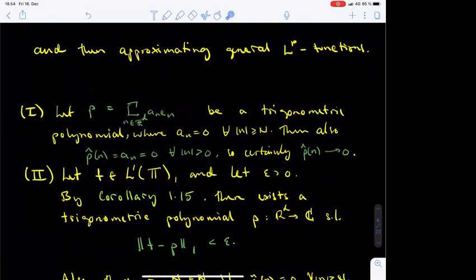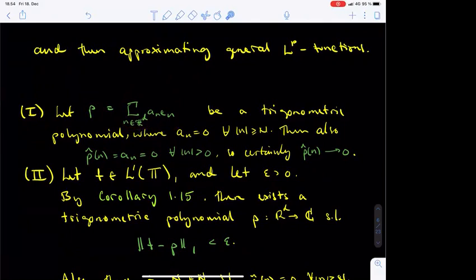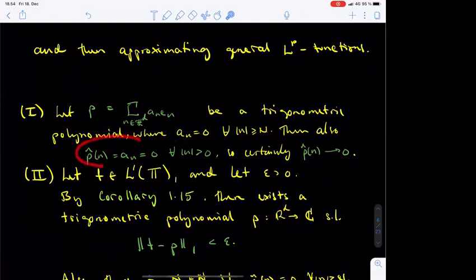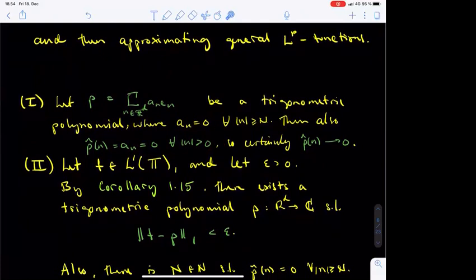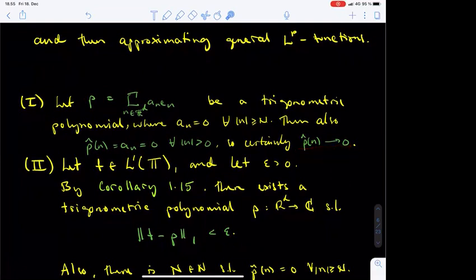With this motivation in mind, let's first prove that the Riemann–Lebesgue lemma holds for a fixed trigonometric polynomial p. A trigonometric polynomial is a finite linear combination of the complex exponential functions. Our fixed polynomial p can be written as a sum over n in Z^d of A_n times e_n, where only finitely many of the coefficients A_n are non-zero. In other words, there is a natural number N such that all coefficients A_n with |n| larger than N are zero. The Fourier coefficients of the polynomial p are precisely the numbers A_n, and hence the Fourier coefficients of p vanish for all indices n whose absolute value exceeds N. This certainly implies that the Fourier coefficients of p tend to zero as n tends to infinity, and hence the Riemann–Lebesgue lemma holds for p.